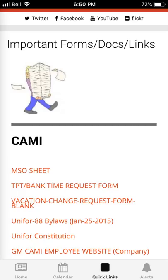If you click on the quick links tab at the bottom you'll be brought to a page where you will have access to our MSO sheets, our TPT bank time request forms, vacation change request forms, our bylaws and constitutions, and hopefully in the future our new collective agreement. You can also download these documents from a computer and print them off at home.